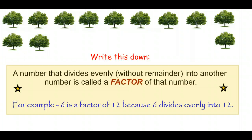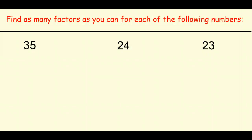Go ahead, pause the video, and write down what you see in the yellow box. You don't have to write down the stars — they're just to draw your attention. Unpause when you're ready. Now I'm going to ask you to think about factors using these three numbers: thirty-five, twenty-four, and twenty-three. See how many different factors you can name for each of them. Pause the video and come back when you're done.